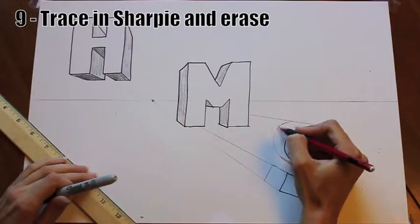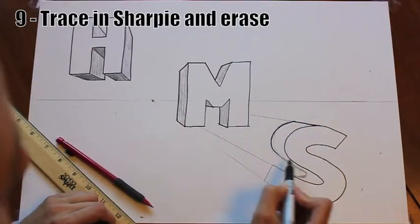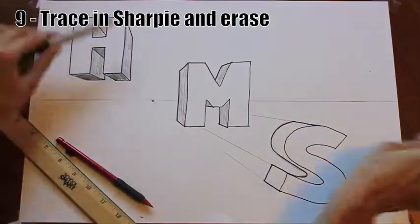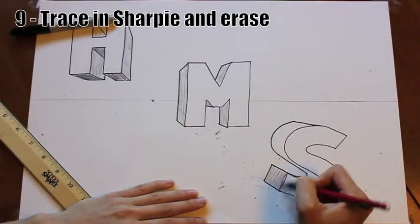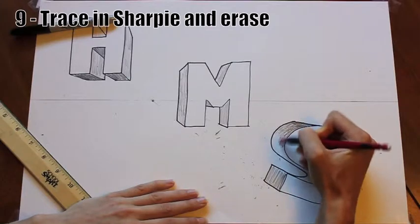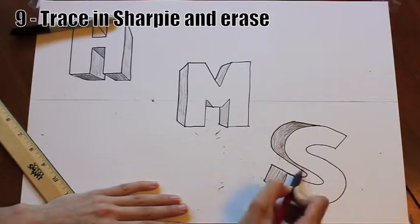Take your time to get these curves just right, but once you've got it, trace those lines in Sharpie, erase your extra pencil lines, and then add shading to really emphasize the three-dimensional effect and the curves on your S.